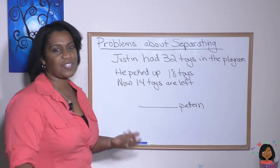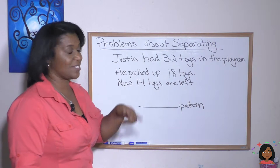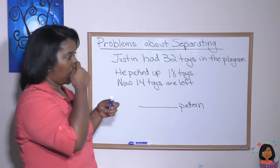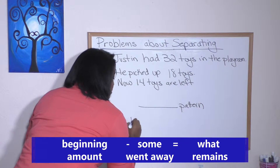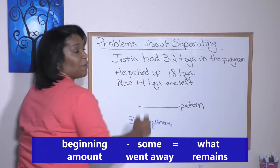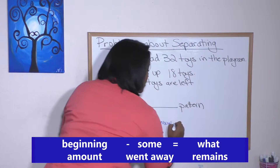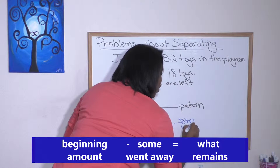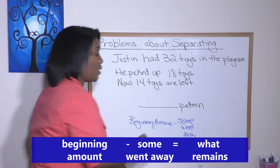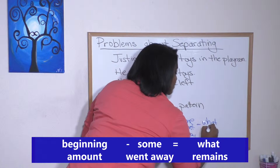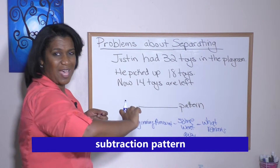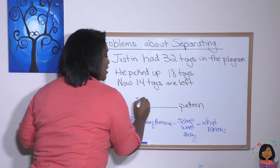Here's my first example. Justin had 32 toys in the playroom. He picked up 18 toys. Now 14 toys are left. What's happening? There was a certain amount in the beginning — I'm going to call that the beginning amount. Then he picked up 18 of them, so some went away. Now there are 14 toys left, a certain amount that remains. We call this a subtraction pattern because we had a certain amount, we subtracted some, and now we have a total.